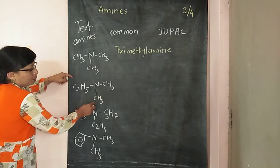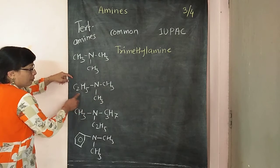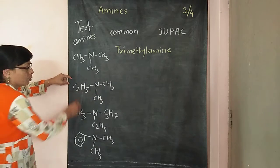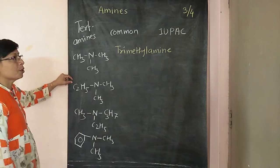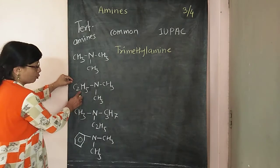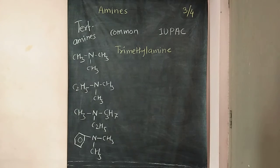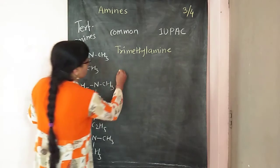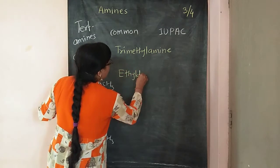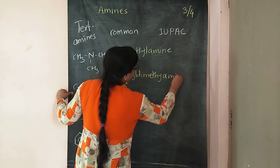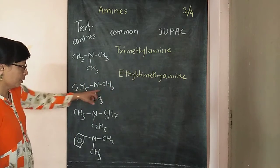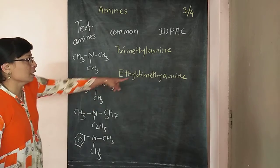The next example has two methyl groups that are the same and one ethyl group. So alphabetically we have to write their names — preference is alphabetical order. So ethyl comes first, then dimethyl. In the common name system the name is ethyl dimethyl amine.